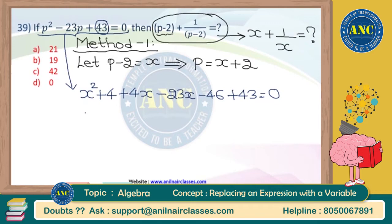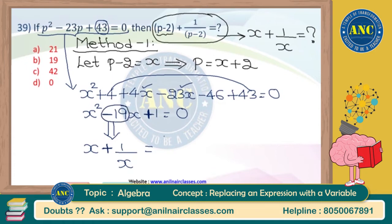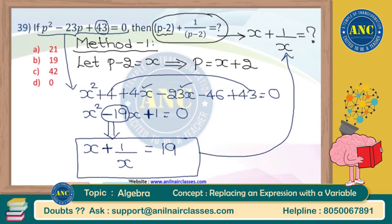Simplifying: x² + (4x - 23x) = -19x, and (4 - 46 + 43) = 1. So the equation becomes x² - 19x + 1 = 0. Since the constant has a plus sign, x + 1/x will also have a plus sign. Shifting -19 to the right-hand side gives x + 1/x = 19. That is the answer for this question.